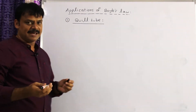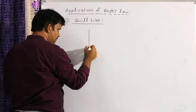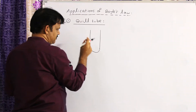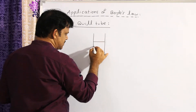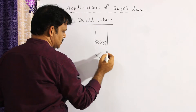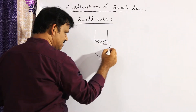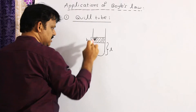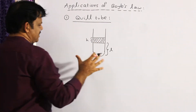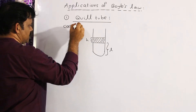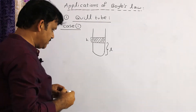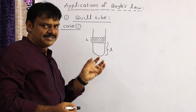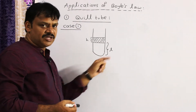A quill tube is a cylindrical capillary tube having a narrow bore with uniform cross-section. Some mercury pellet is enclosed in it, and between the mercury pellet and the closed end some air will be trapped. Let small l be the length of the air column and small h be the length of the mercury pellet. In a quill tube, one end is closed and one end is open.